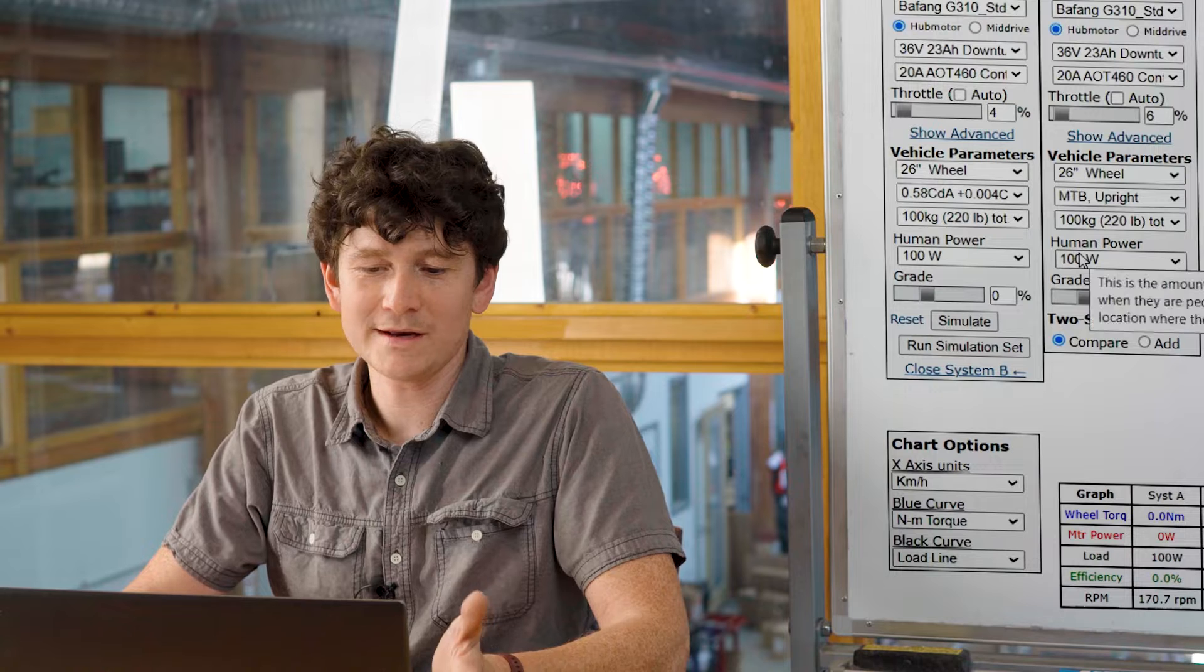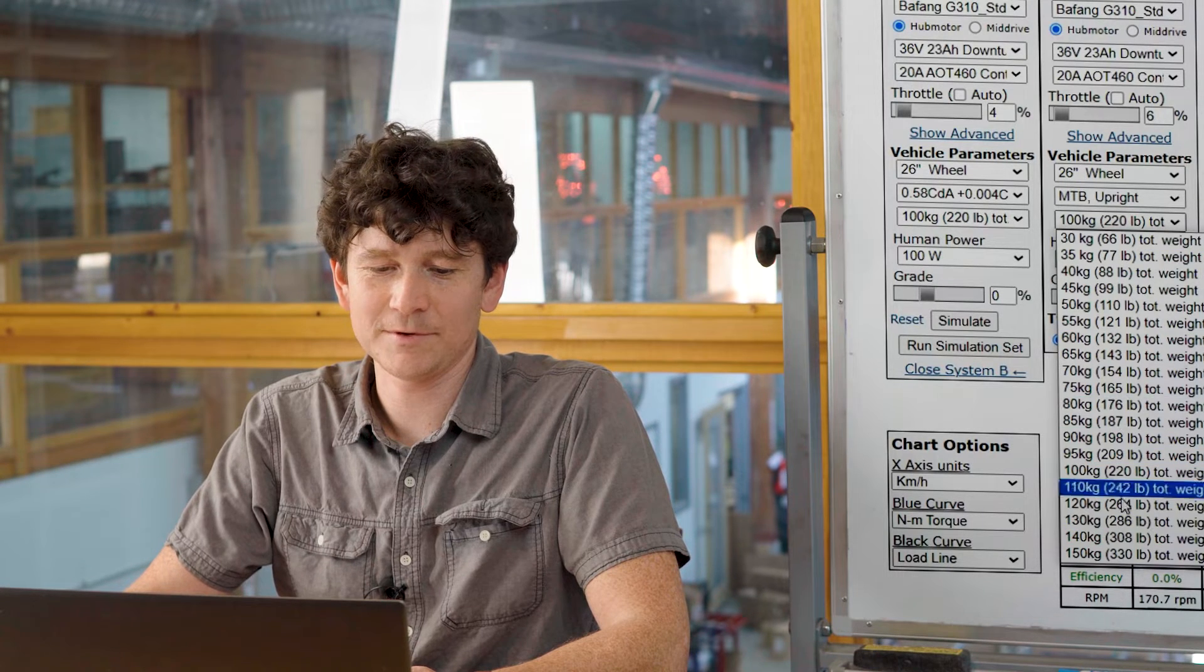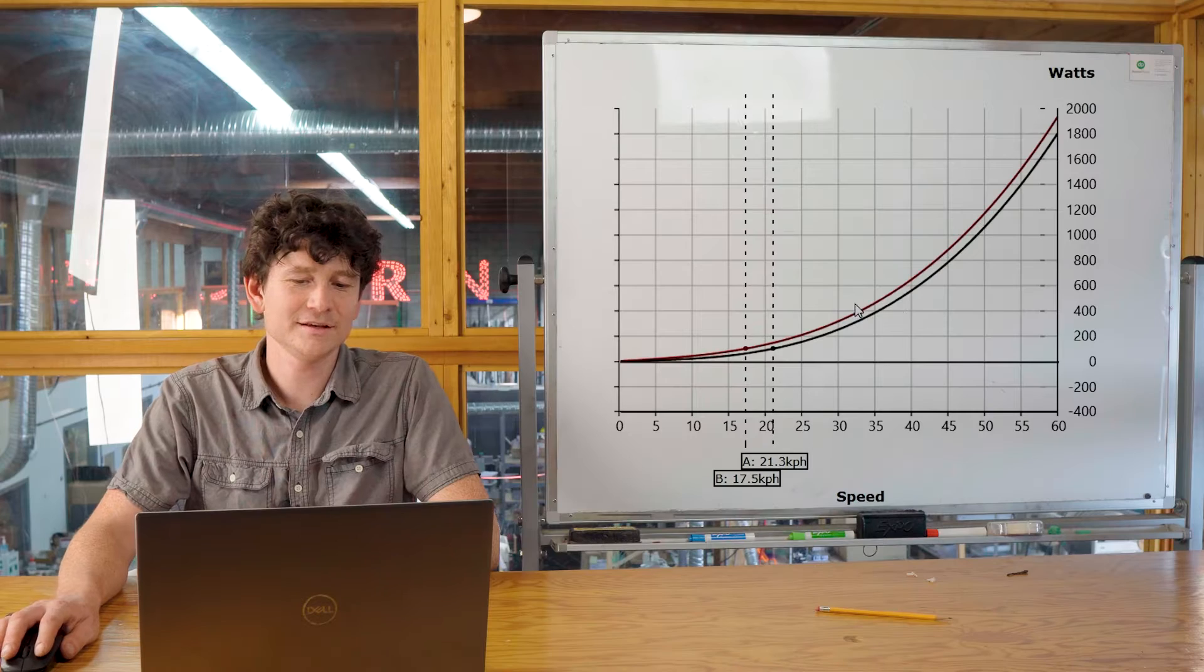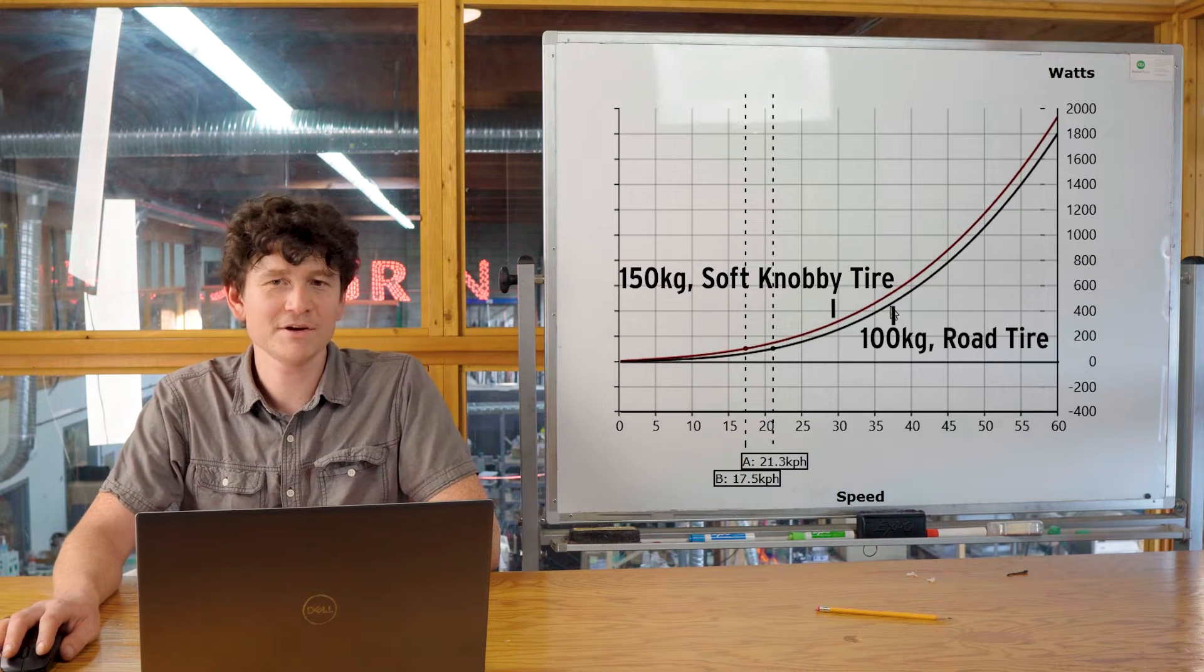If we change the weight of the rider, that also has a small effect on this overall plot. If I go from a 100 kilo rider to somebody who weighs 150 kilograms, you can see the power is slightly higher across the whole speed range, but not a huge difference.